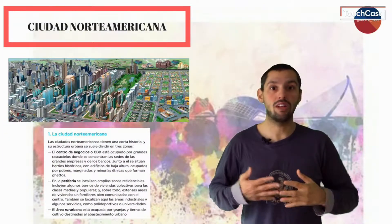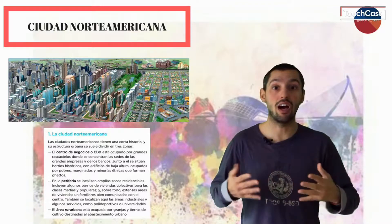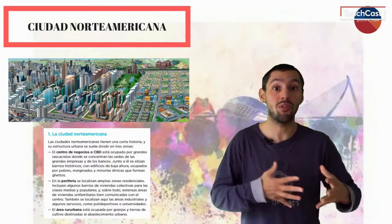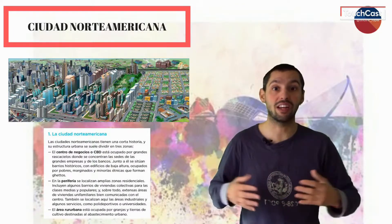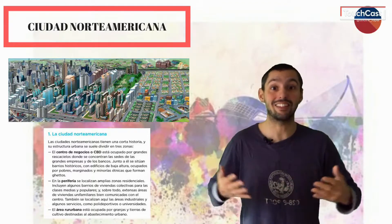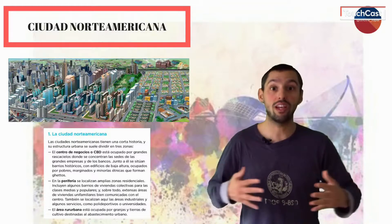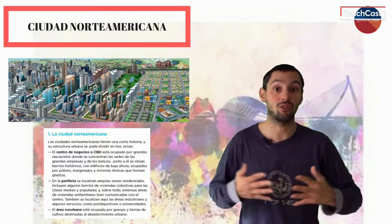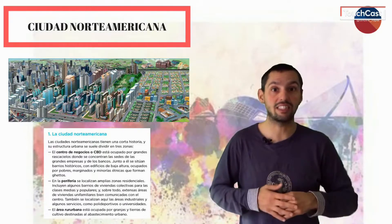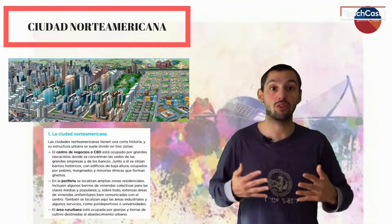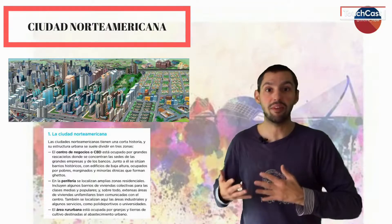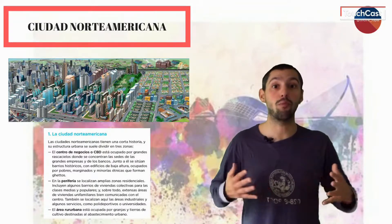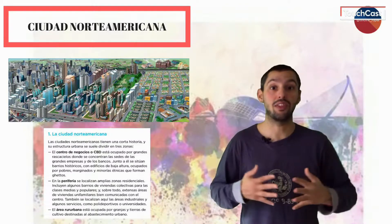En cuanto al primer tipo, la ciudad norteamericana, con una corta historia y no afectadas por conflictos bélicos contemporáneos como en Europa, se estructura a través, en primer lugar, de un centro financiero de negocios ocupado por grandes rascacielos donde se concentran las sedes de multinacionales y empresas financieras. Junto a este, una zona urbana histórica y de baja altura es transitada por marginados y minorías étnicas. La periferia se compone de amplias zonas residenciales de clases medias unifamiliares conectadas con la urbe. También se abre una amplia gama de servicios e industrias. En último lugar, el área rural urbana es ocupada por granjas y tierras de cultivo que abastecen a la ciudad.